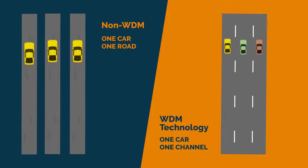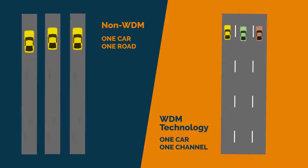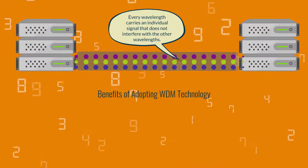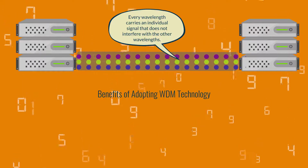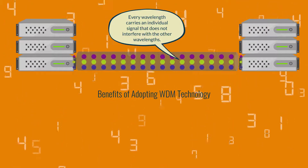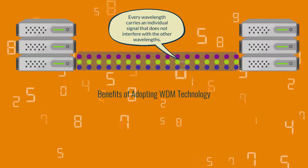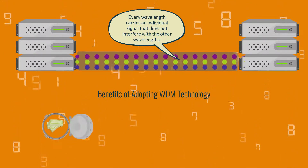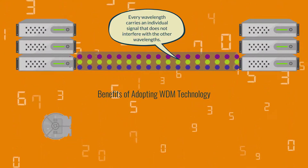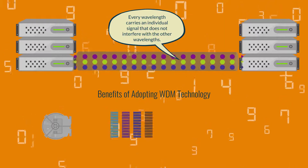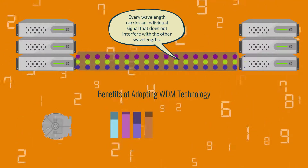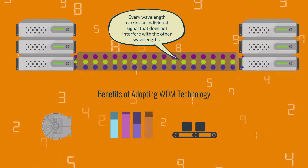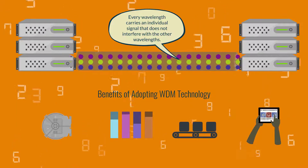We can think of it as cars on the road. Every wavelength carries an individual signal that does not interfere with the other wavelengths. There are plenty of benefits to implementing WDM technology: saving fiber resources and operation expenditures, transparent transmission, and smooth expansion as network development, even improving the reliability of the system.